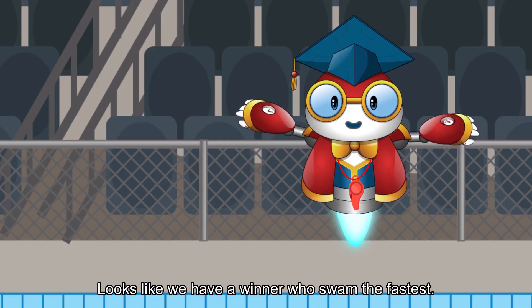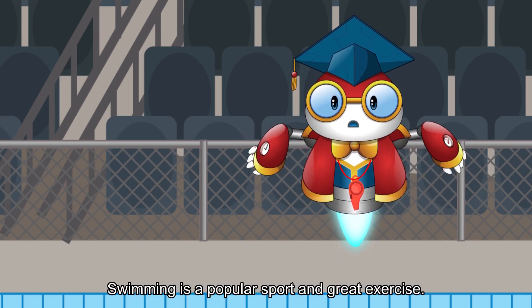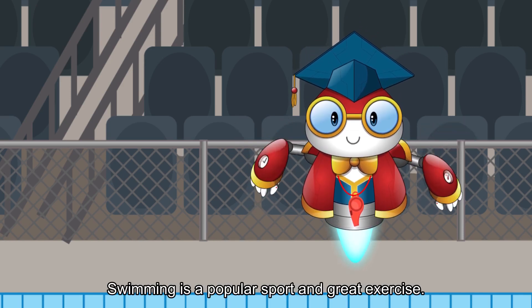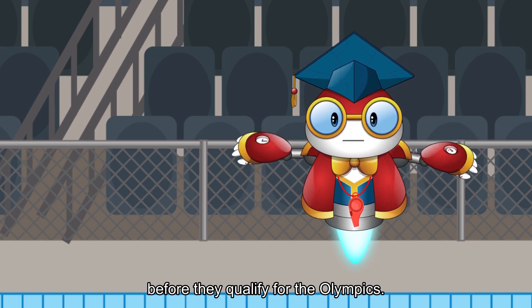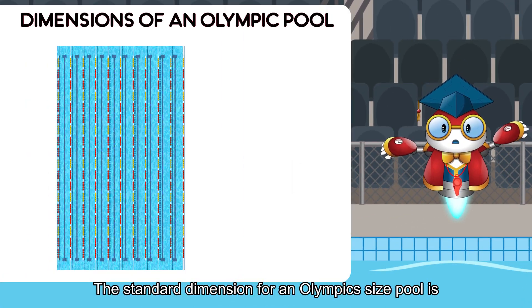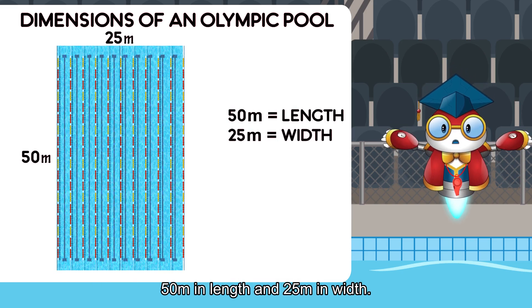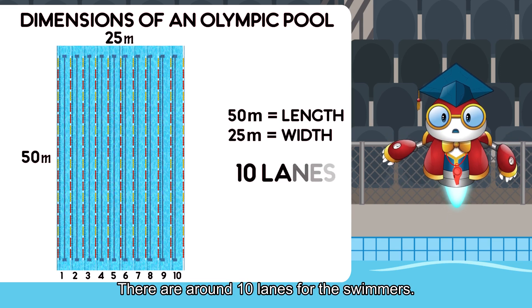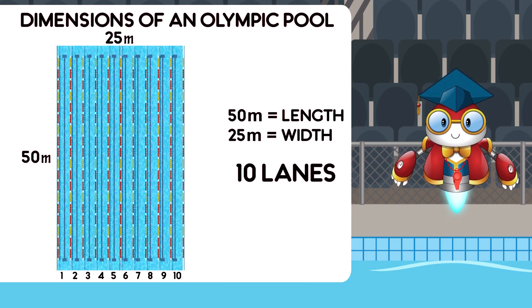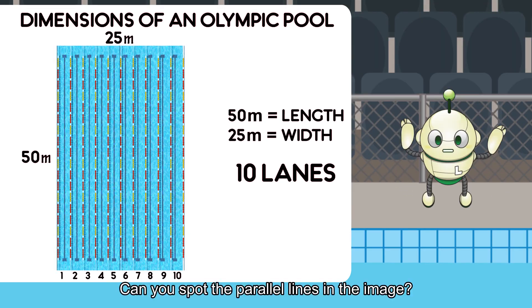Looks like we have a winner who swam the fastest! Swimming is a popular sport and great exercise. Professional swimmers practice for years before they qualify for the Olympics. The standard dimension for an Olympic-sized pool is 50 meters in length and 25 meters in width. There are around 10 lanes for the swimmers. Can you spot the parallel lines in the image?